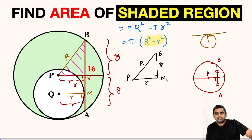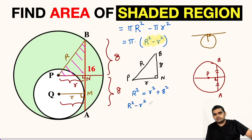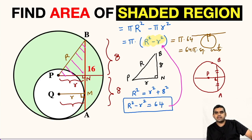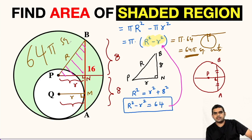We will apply the Pythagorean theorem in triangle PBN. We get R² = r² + 8², and subtracting r² from both sides gives R² − r² = 64. Substituting this back, the area of the shaded region equals π × 64, or 64π square units. You can substitute π as 3.14 to get the answer in decimals, but the area of this shaded region is 64π square units.